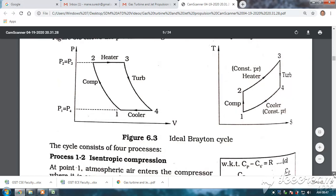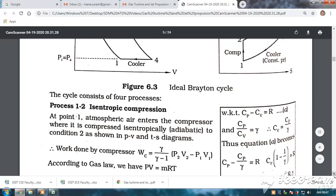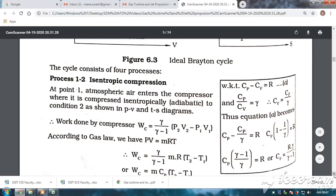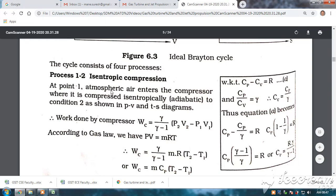There are four processes. One is isentropic compression. The entropy is constant isentropic compression. You please see this work done is equal to γ/(γ-1) in bracket P2V2 minus P1V1. How they have come to this is, Cp minus Cv is equal to R. Therefore, and Cp by Cv is equal to γ. These are the two known relations. Cp minus Cv is equal to R and Cp by Cv is equal to γ.